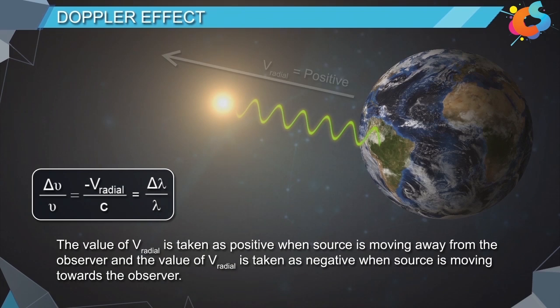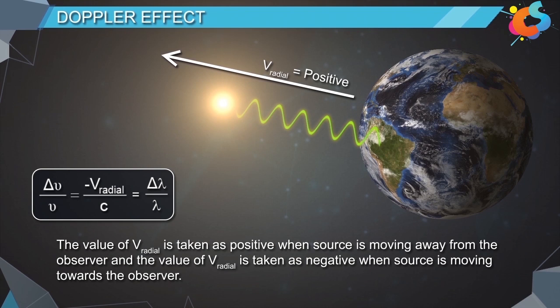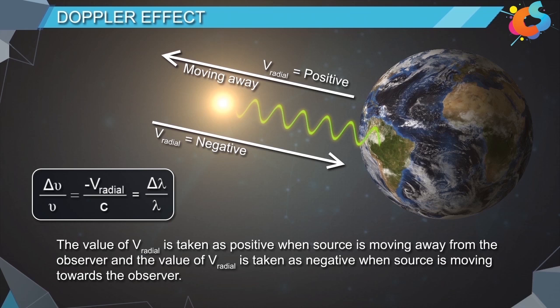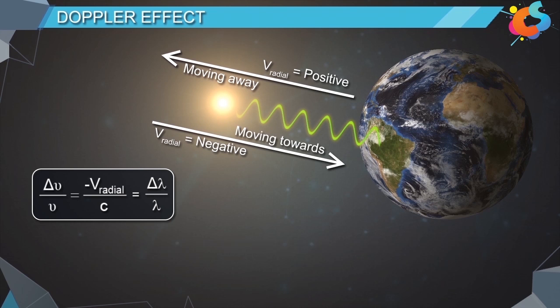The value of v_radial is taken as positive when the source is moving away from the observer, and the value of v_radial is taken as negative when the source is moving towards the observer. Note that these formulae are applicable only when the velocity of source is far less than the velocity of light.